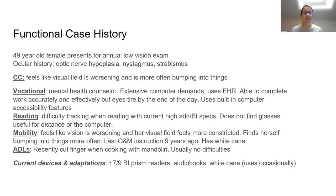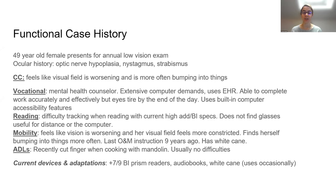At this point, she has a few devices in place: prism half-eye reading glasses of plus 7 diopters with 9 prism diopters base-in in each eye, audiobooks for pleasure reading, and a white cane she occasionally uses for mobility activities.